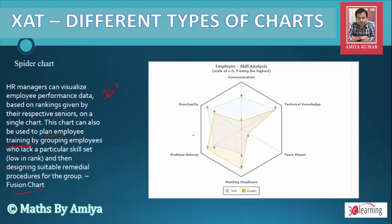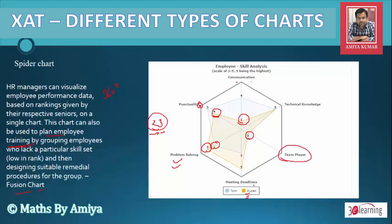For future planning: if we have to work on punctuality, we work on Suzan's performance. We know Suzan's problem-solving skill is very good, so if we need to give problem-solving training, we give it to Tom. If a score is less than 3, training is required. So training is required for Suzan in communication skill and team player skill. If team player activity is needed, both Tom and Suzan would attend that training.